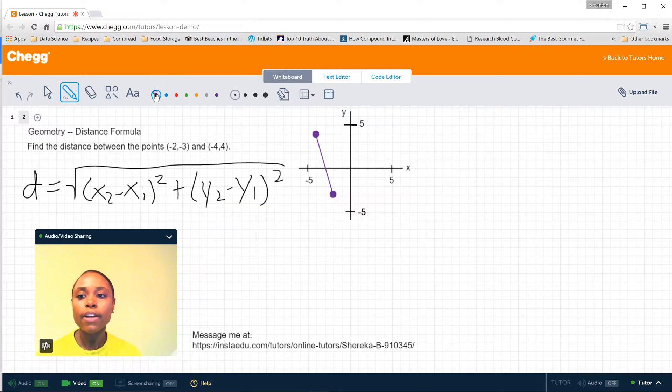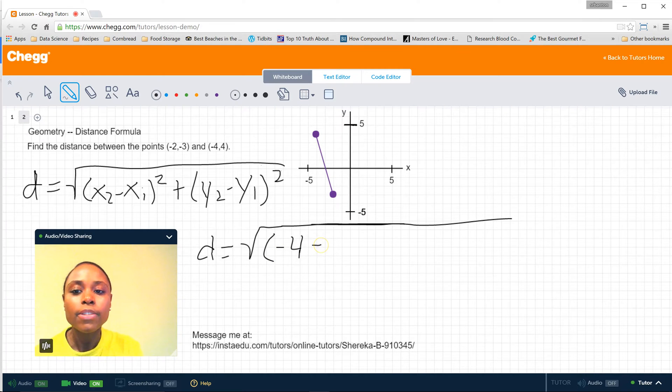So if we go ahead and start plugging in the coordinates we've been given into this, what we'll find is that we'll have d is equal to x2, in this case (-4), minus x1, (-2), squared, plus y2, which is 4, minus (-3), squared.